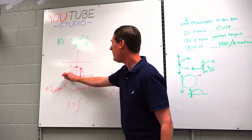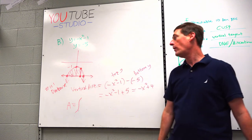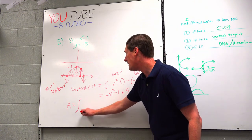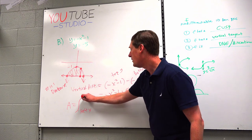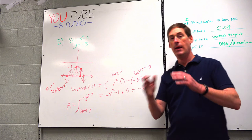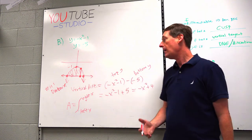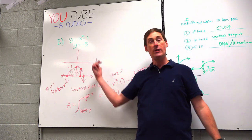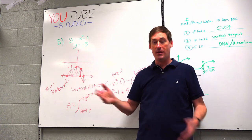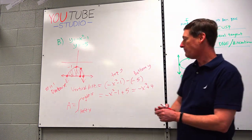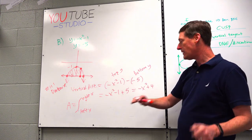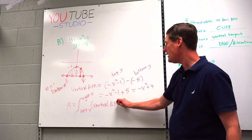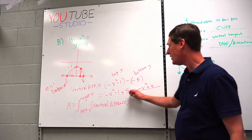Let's simplify the vertical distance: negative X squared minus 1 minus negative 5 gives negative X squared plus 4. That is the vertical distance from any point on the parabola directly down to the line. But that's only one single vertical distance — I want all of them. The area of that odd shape is the integration from left corner to right corner of the vertical distance. I need to find those intersection points — the boundaries — because I'll integrate from left X to right X.